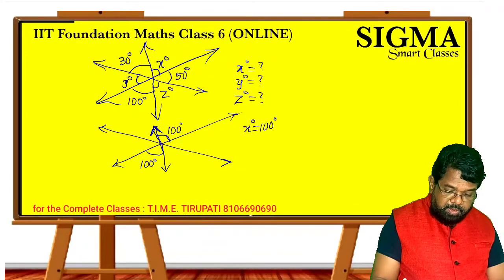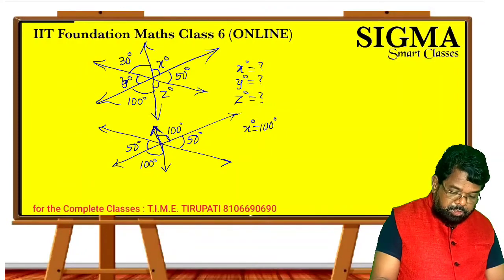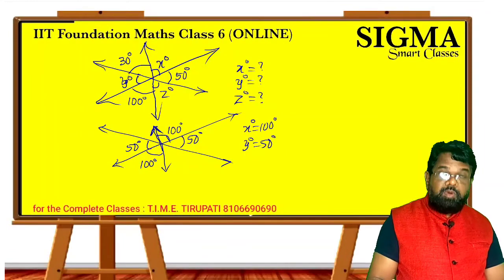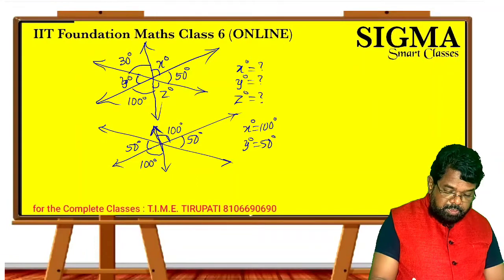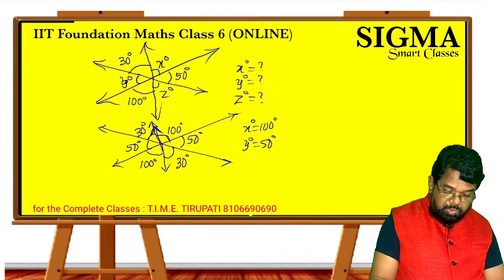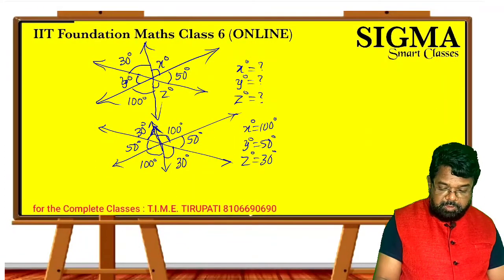Similarly, here 50 degrees is given. Opposite to that, what is the opposite angle? It is also 50 degrees — and that is Y. So Y is equal to 50 degrees. Now, Z is opposite to the angle of 30 degrees given here. If it is 30, opposite to that is also 30. So Z is equal to 30 degrees.